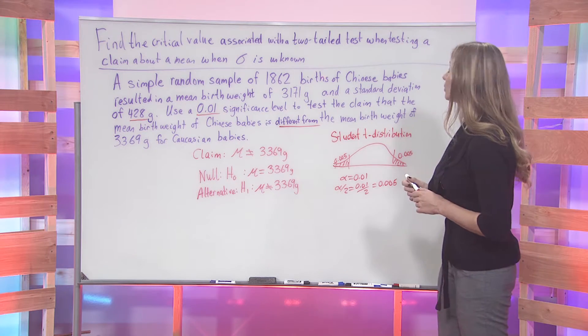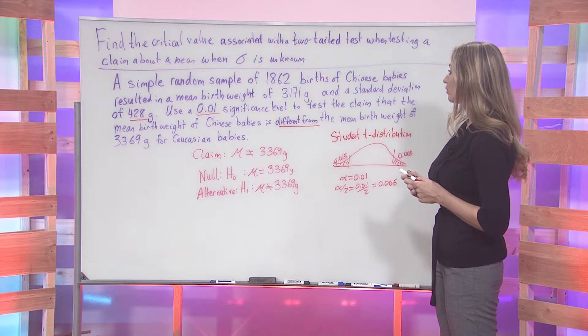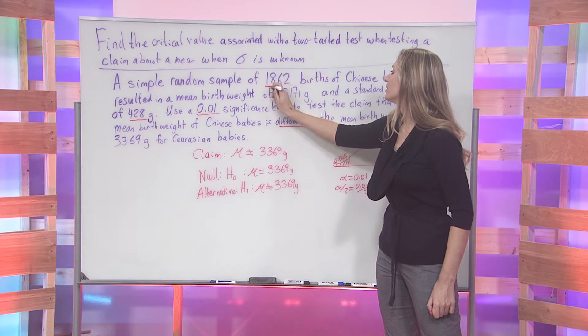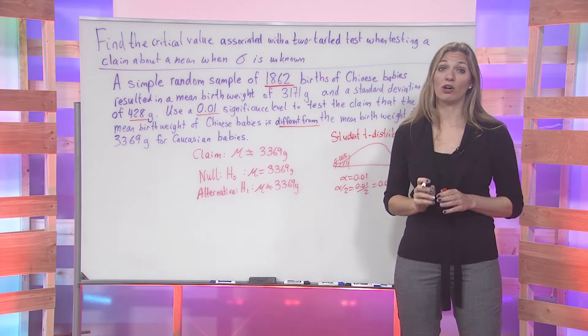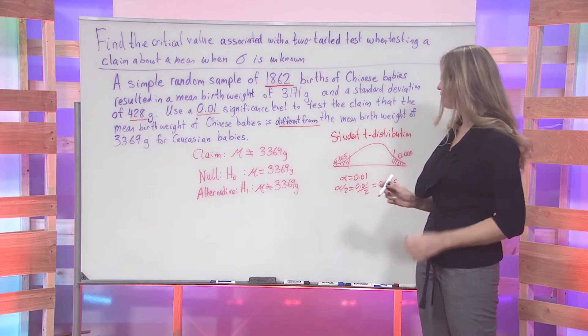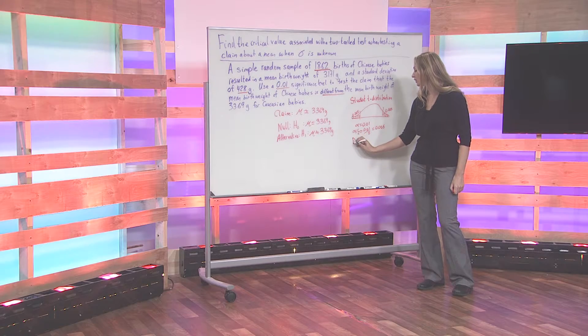Now, in order to use the t-chart, we must first take into account our degrees of freedom. 1,862 is a very large sample size, so we can use our large degrees of freedom here looking at 2,000.